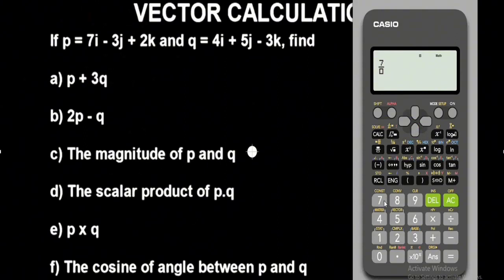The magnitude of vector Q was 7.01. So these are the values we got respectively. We press equals to get the output. So we now have cos θ equals 47 over (7.87 times 7.01), which gives us the ratio of the dot product to the product of the magnitudes. To make θ the subject we find the inverse cosine of what we have here.